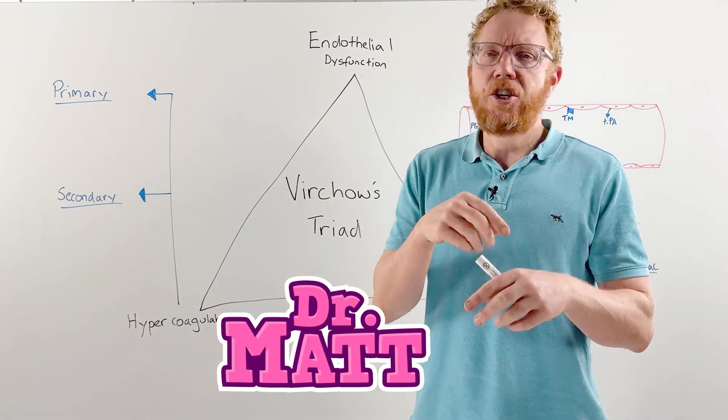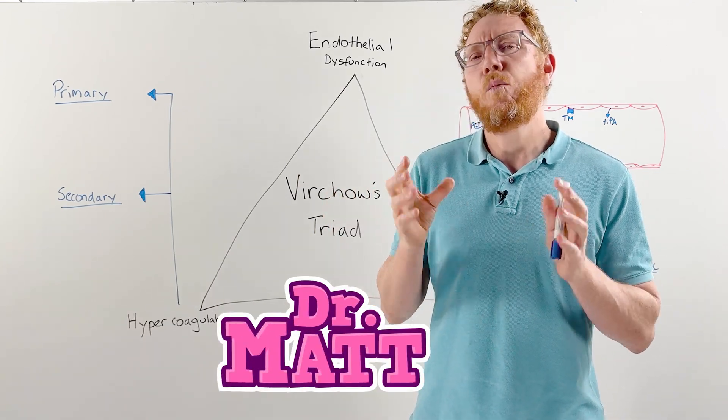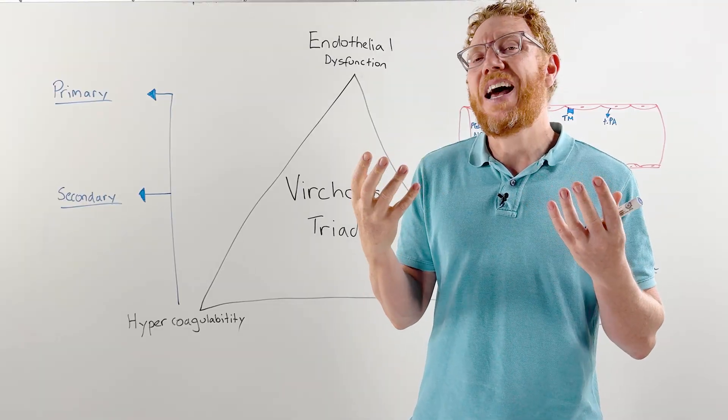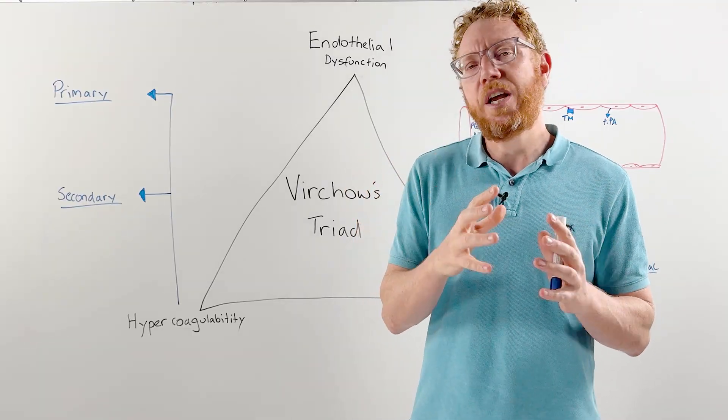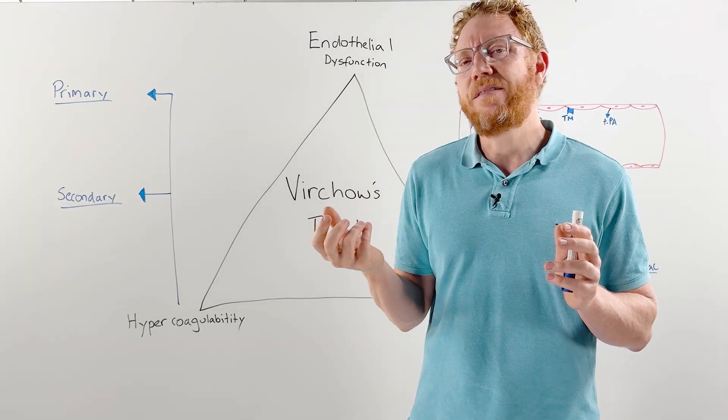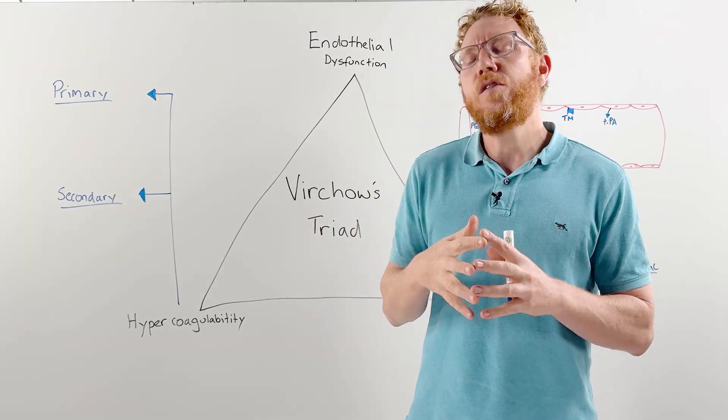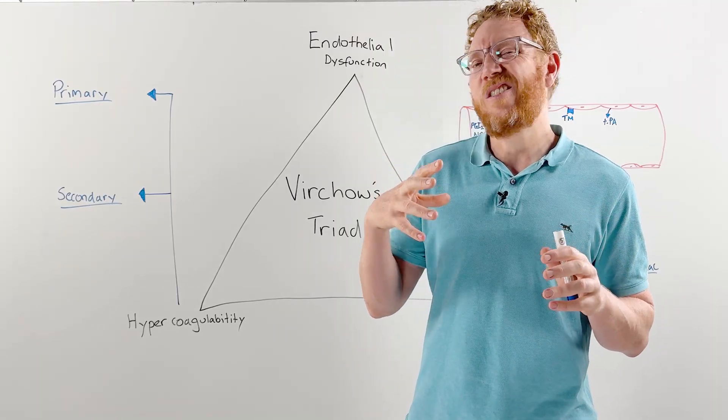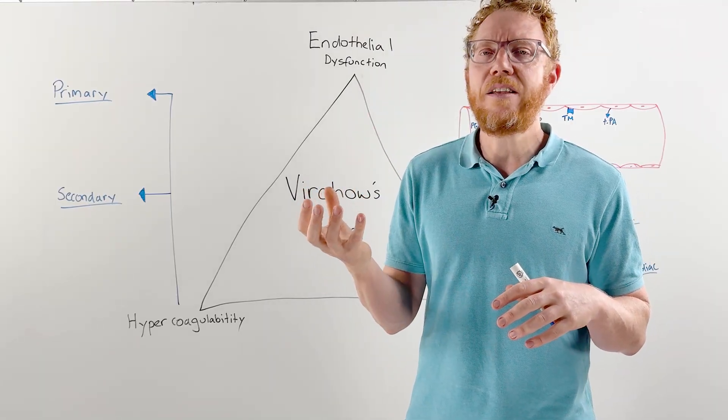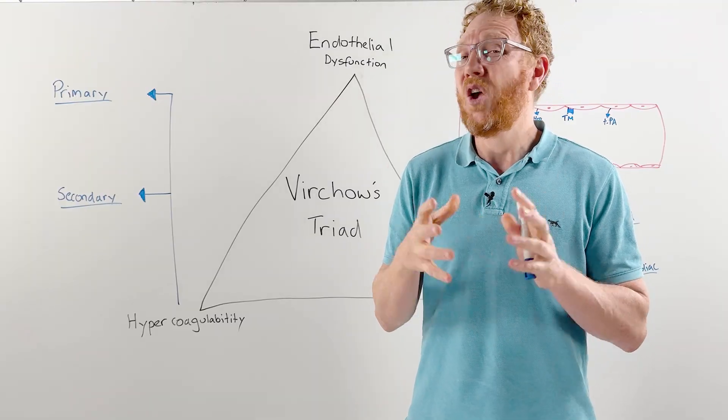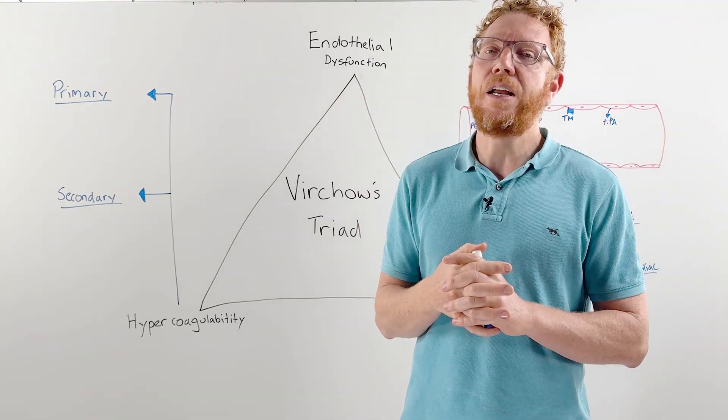When we get an injury like a laceration or paper cut, we need our blood to form a clot to stop bleeding and prevent life-threatening blood loss. But what happens when clots start to form in healthy blood vessels? This is known as thrombotic disorders. In this video, we're going to understand what a thrombotic disorder is and the common causes behind these potentially life-threatening conditions.